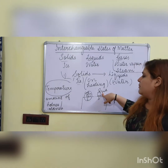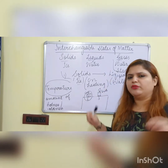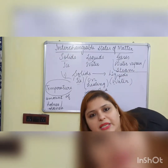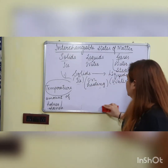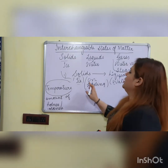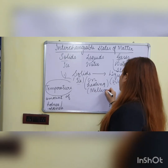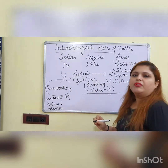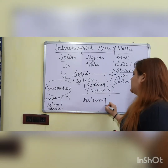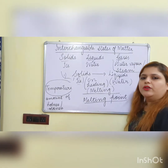So the temperature at which a solid melts into a liquid — since the name of the process is melting — is called the melting point of that solid. The temperature at which a solid changes into a liquid is called the melting point.